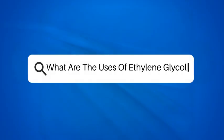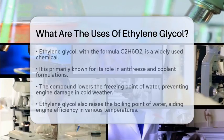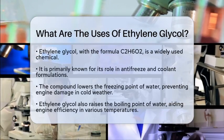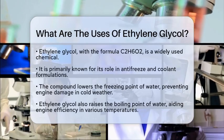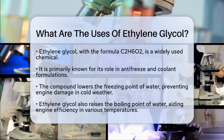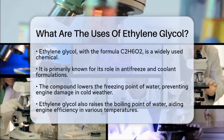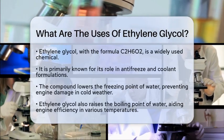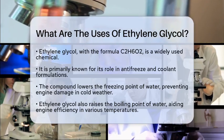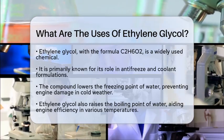What are the uses of ethylene glycol? Have you ever wondered what makes ethylene glycol such a popular chemical? Ethylene glycol, with the chemical formula C2H6O2, is a versatile compound used in many industries. Let's uncover its various applications and why it matters.